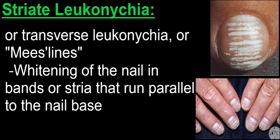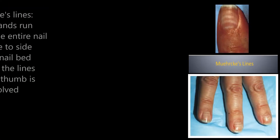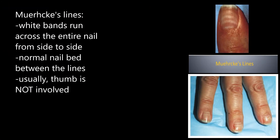The second subtype is striate leukonychia, or transverse leukonychia, also known as Mees' lines. In this form, we have white horizontal bands that run parallel to the nail base, but they don't cross all the way from one side to the other. This is in contrast to what we call Muehrcke's lines, where the white bands run entirely across the nail from one side to the other, and the nail in between the white lines appears normal. Also in contrast to Muehrcke's lines, Mees' lines don't move as the nail grows, and they temporarily disappear when pressure is applied to the nail. This is because the problem is not in the nail itself, but is thought to be due to the blood flow beneath the nail plate.